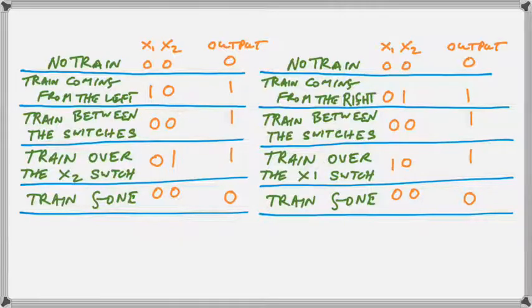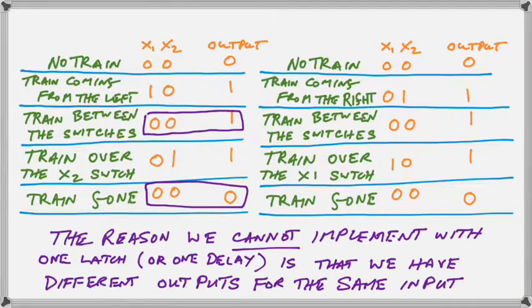So the very fact that we need the same input conditions to have both a 1 and a 0 on the output signifies that we cannot implement this behavior with one latch or one delay. If you're using the delay mechanism we have to have more than one latch or delay circuit in order to get this kind of behavior.